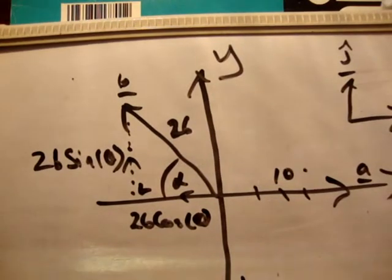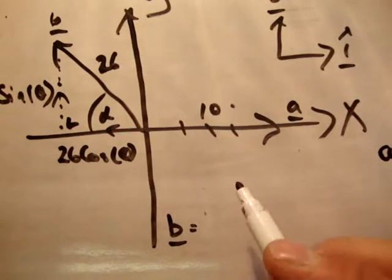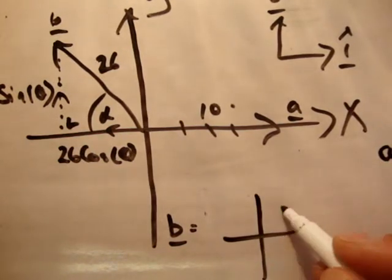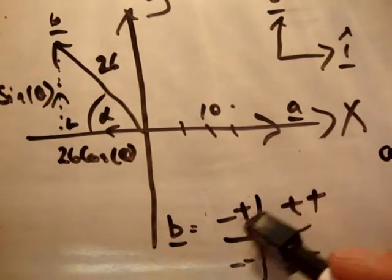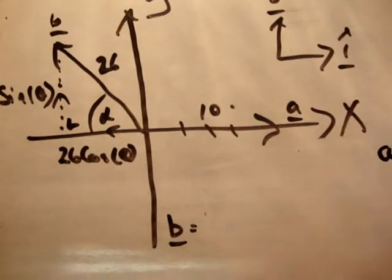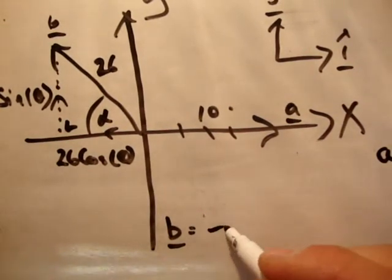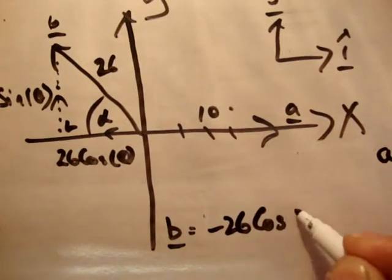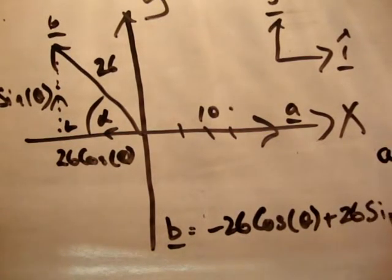Therefore b is equal to, remember again your quadrants, you have plus plus, minus minus plus minus minus and plus minus. So I'm going pretty quickly because to be honest this is towards the end of the chapter and nothing has changed, we've done these plenty of times. So it's negative 26 cosine of theta i hat and positive 26 sine of theta j hat.